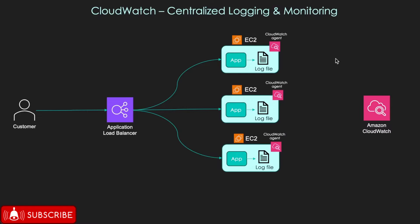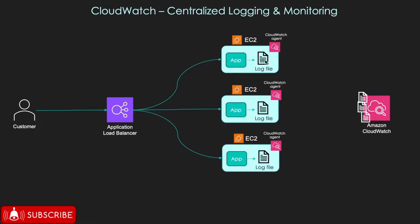To achieve this, a CloudWatch agent has to be installed on your EC2 instance. This CloudWatch agent will ensure that the log files are copied from the EC2 instance to CloudWatch. And this is not a one-time activity — as and when the logs are updated, the CloudWatch agent will ensure that the new log content is copied into CloudWatch. Now, all your logs are present in CloudWatch and you can easily analyze them using the CloudWatch service, which provides an easy-to-use interface where you can search the logs.